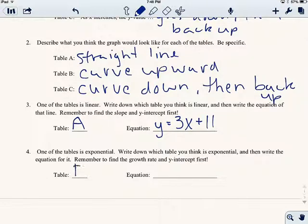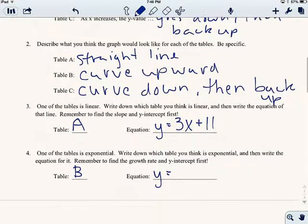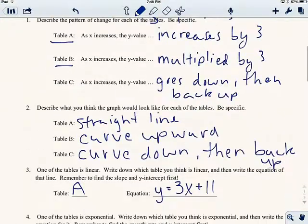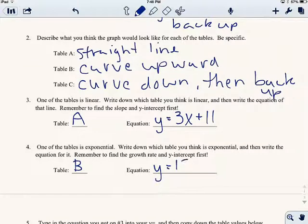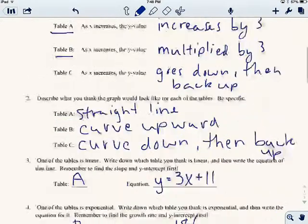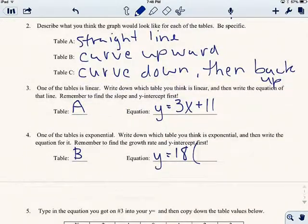One is exponential. That's going to be B, because it's a multiplying pattern, not an adding pattern. Write down which table you think is exponential or an equation. So the equation, Y equals, now remember, for exponentials, we start off with the starting point, 18. So Y equals 18, and then we do our common multiplier. So our common multiplier here again is 3, so we're multiplying by 3 every time. 3, raise to the X. All right, cool, front page is done.